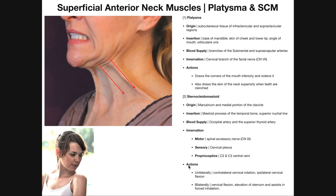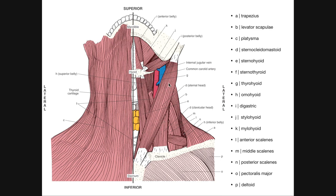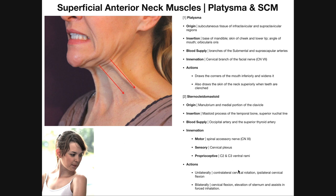The actions of the sternocleidomastoid depend on whether one or both are contracting. With unilateral contraction — say the left sternocleidomastoid — you get contralateral cervical rotation: the left SCM contracting rotates the head to the right. However, you also get ipsilateral cervical flexion and lateral flexion — so the left SCM produces lateral flexion to the left as well.